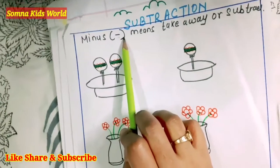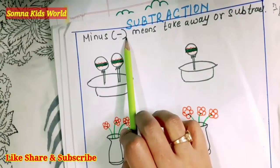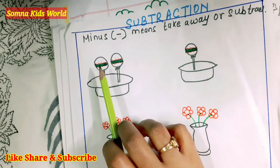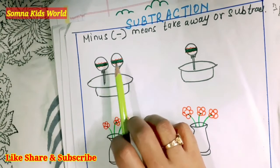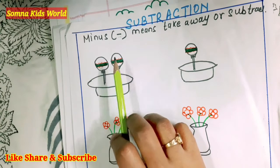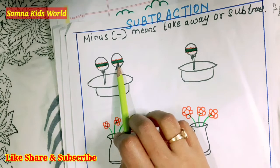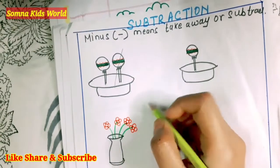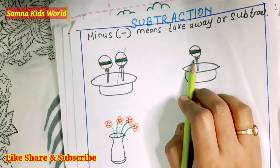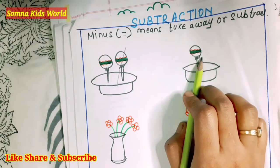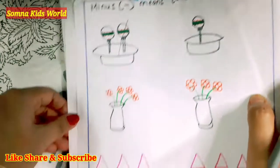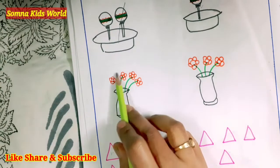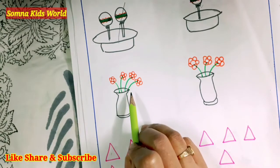You can see here we are having two lollipops — one, two. Now if I take away one lollipop, if I cut one lollipop, then how many lollipops are left? One lollipop.